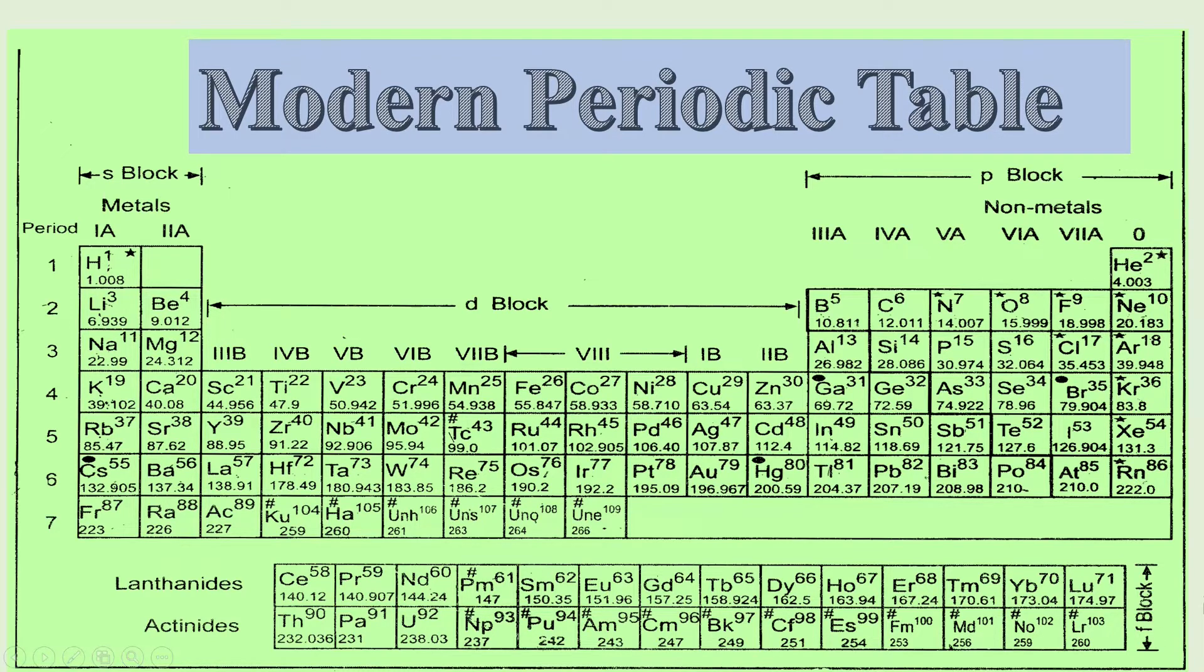Left hand side, S block, right hand side, P block, middle part, D block. And at the bottom, it is F block element. D block element and F block element both are transition element. But D block is called transition element and F block is called inner transition element.